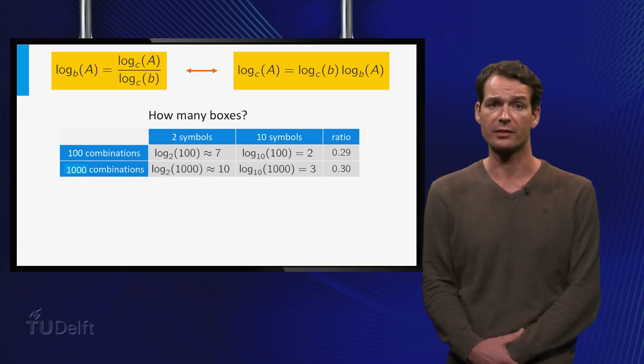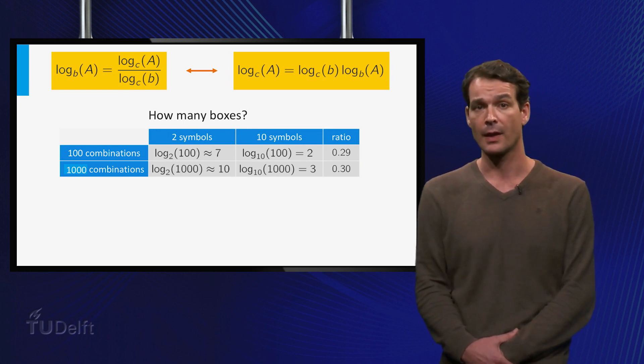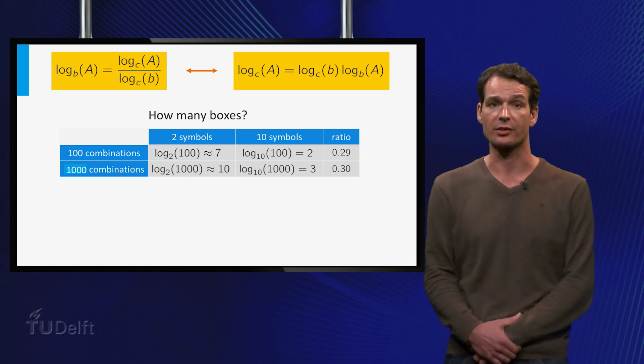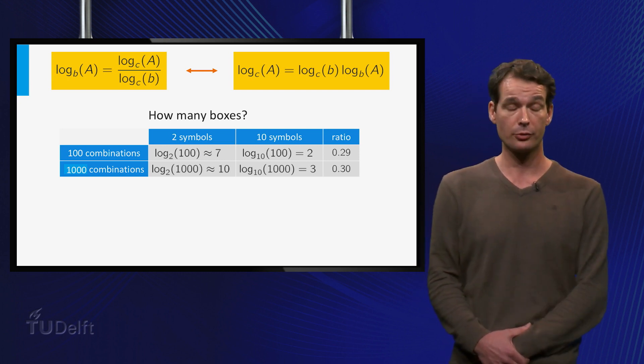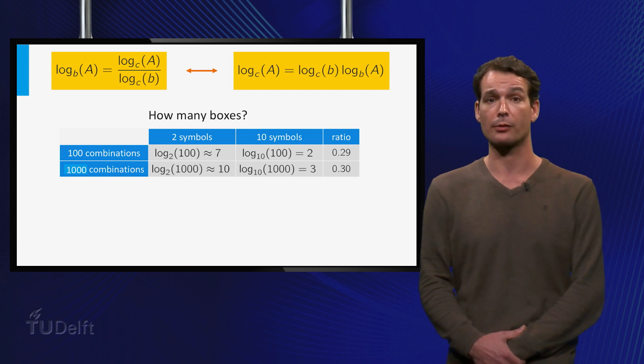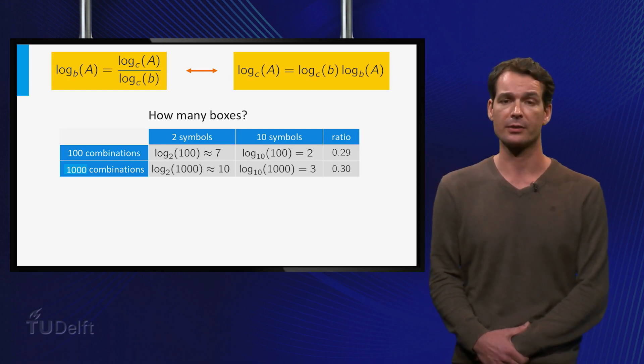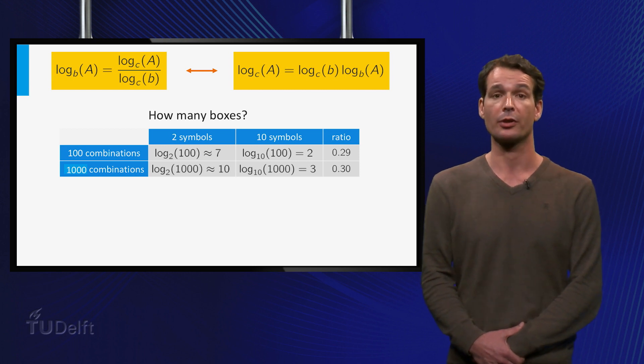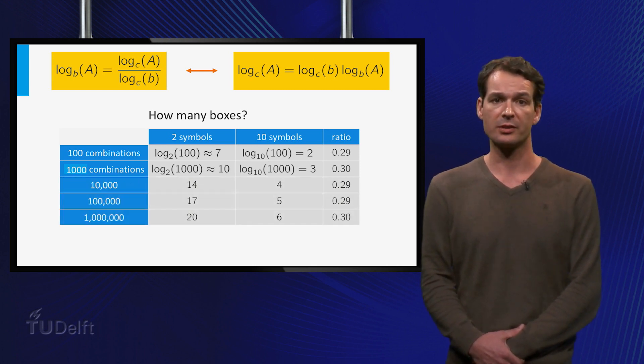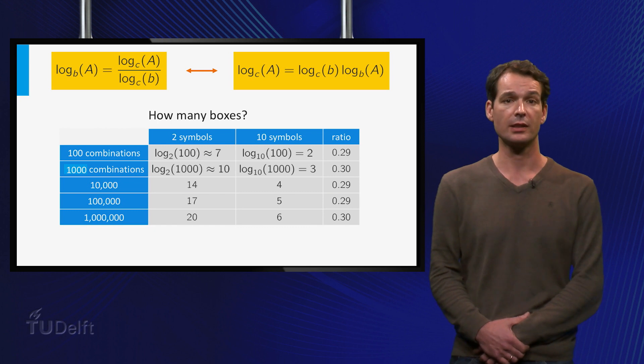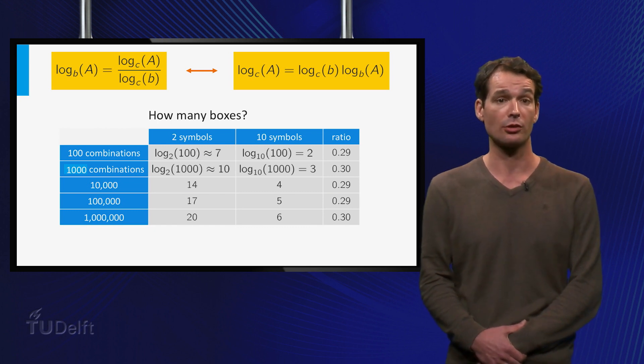Now what about 1000 combinations? In base 10 we need 3 boxes since 10 to the power 3 is equal to 1000. And in base 2 we need 10 boxes since 2 to the power 10 is the smallest power of 2 larger than 1000. This differs by a factor 3 over 10 which is 0.3. Now what about 10,000 combinations or a million? Here are the numbers for these cases. You can see that the ratio is always about 0.3.